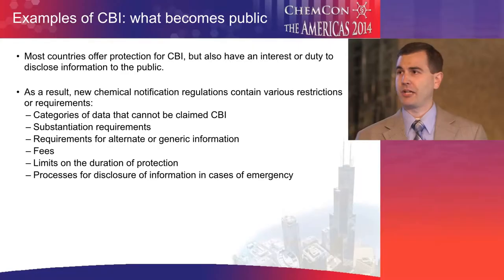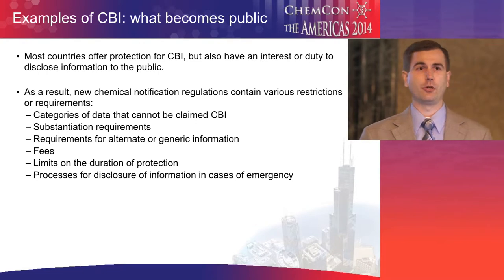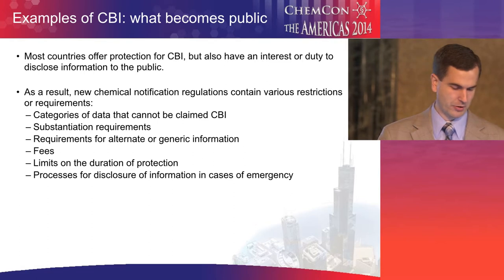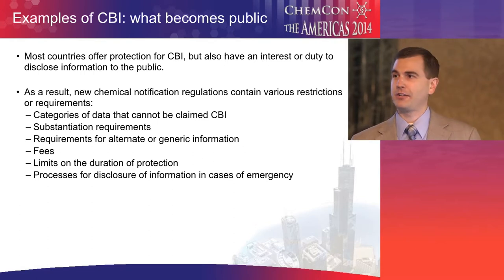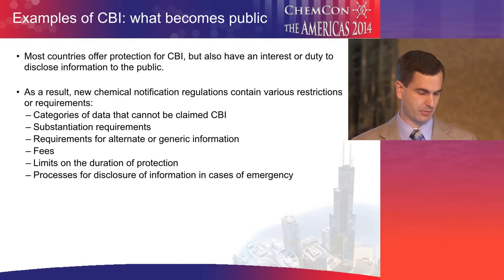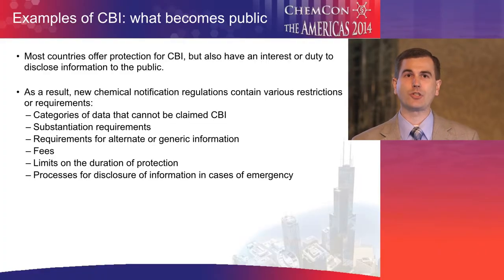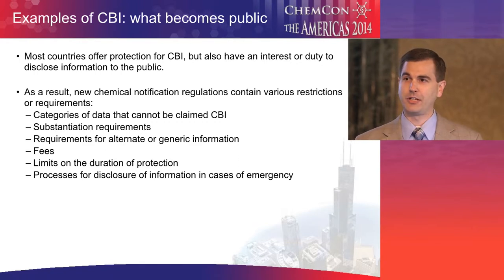Most countries do offer protection for confidential information in your notifications and recognize the intellectual property rights of the submitters. But on the other hand, they also have an implied or explicit duty in some cases to provide information on chemicals to the public. So they're really looking for the balance between those two competing goals. This slide lists some of the common examples of restrictions they put in place to strike the balance between the rights of the notifier and the public's need or right to know.